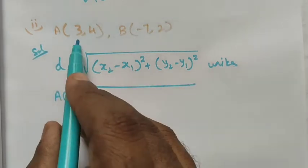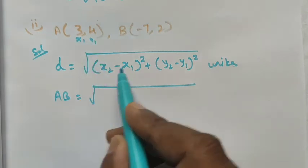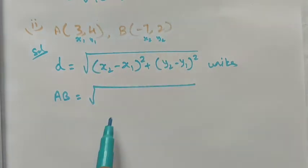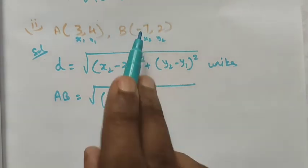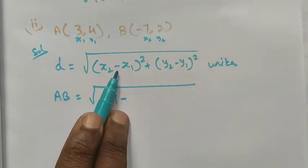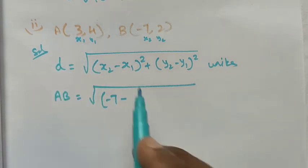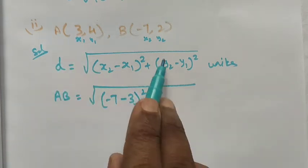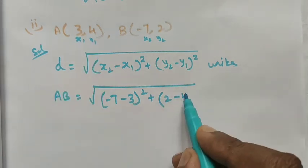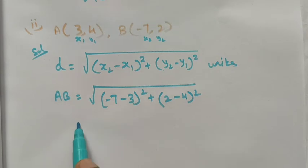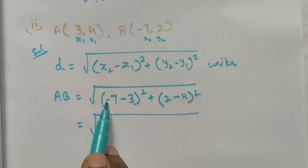So the distance AB: the first point we take as (x1,y1), the second as (x2,y2). So x2 is -7 minus x1 is 3, whole squared, plus y2 is 2 minus y1 is 4, whole squared. This equals √...